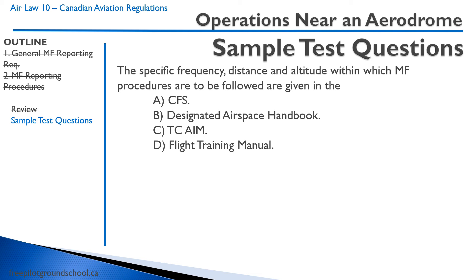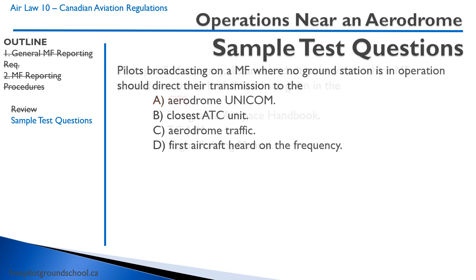Now for a few sample test questions. The specific frequency, distance, and altitude within which MF procedures are to be followed are given in the Canada Flight Supplement — you can look this up with your instructor. It's organized alphabetically like a phone book; look up the airport and it will tell you frequencies and specific circuit procedures. When broadcasting on MF where no ground station is in operation, the correct answer is to direct your transmission to aerodrome traffic — not the closest ATC unit, and not the first aircraft heard on frequency, because you might not hear anybody but you still need to make a radio call.